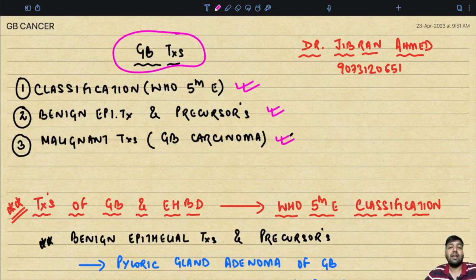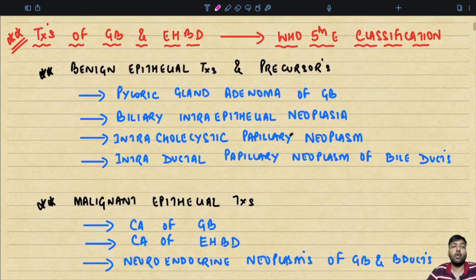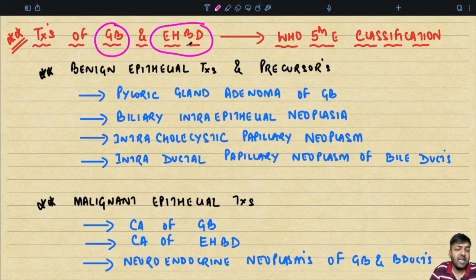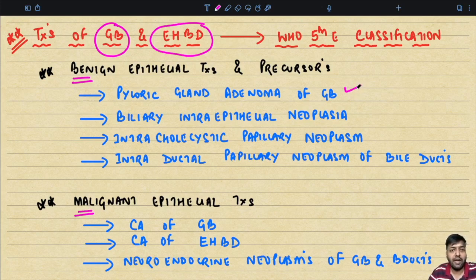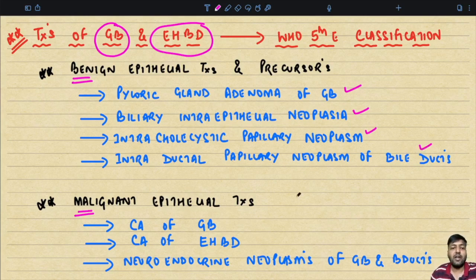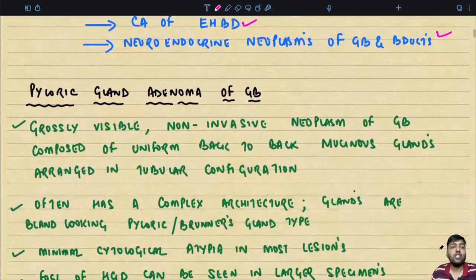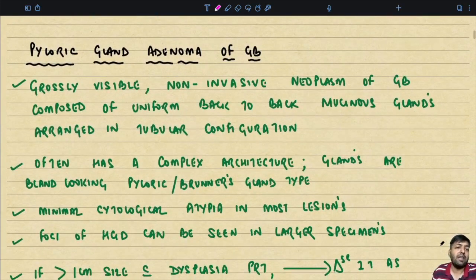The WHO fifth edition classification of tumors arising from the gallbladder and extrahepatic biliary duct has two groups. Benign epithelial tumors and precursors include: pyloric gland adenoma of the gallbladder, biliary intraepithelial neoplasia, intracholecystic papillary neoplasm, and intraductal papillary neoplasm of the bile duct. Malignant epithelial tumors include carcinoma of the gallbladder, carcinoma of the extrahepatic biliary duct, and neuroendocrine neoplasms of the gallbladder and biliary ducts.